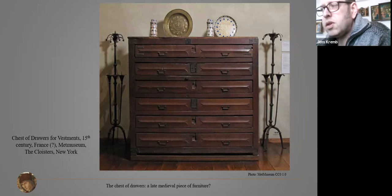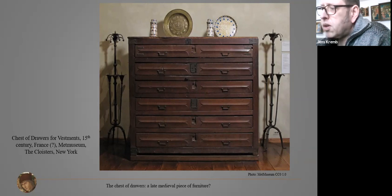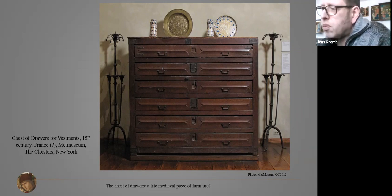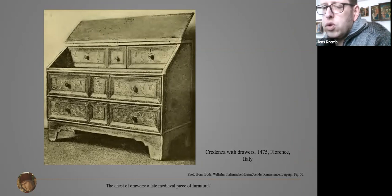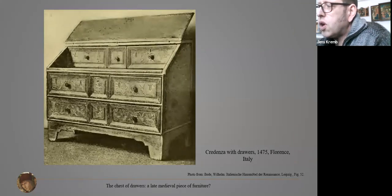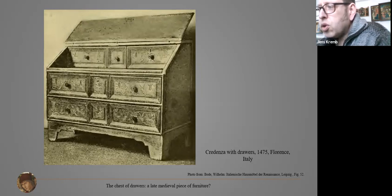Another early example of furniture with drawers, dated to the 15th century and possibly from France, is the so-called chest of drawers for vestments in the Metropolitan Museum's Cloisters in New York. That furniture is an independent standalone piece and doesn't seem to be an underpart of a sacristy cupboard, but the shape is also different from the furniture on the Augustina Altarpiece. Early types of furniture with drawers can also be found in Italy — here an example dated to 1475, published by Wilhelm Bode in his publication about Italian house furniture of the Renaissance from 1902, described as a credenza with drawers, in his opinion the precursor of the chest of drawers.